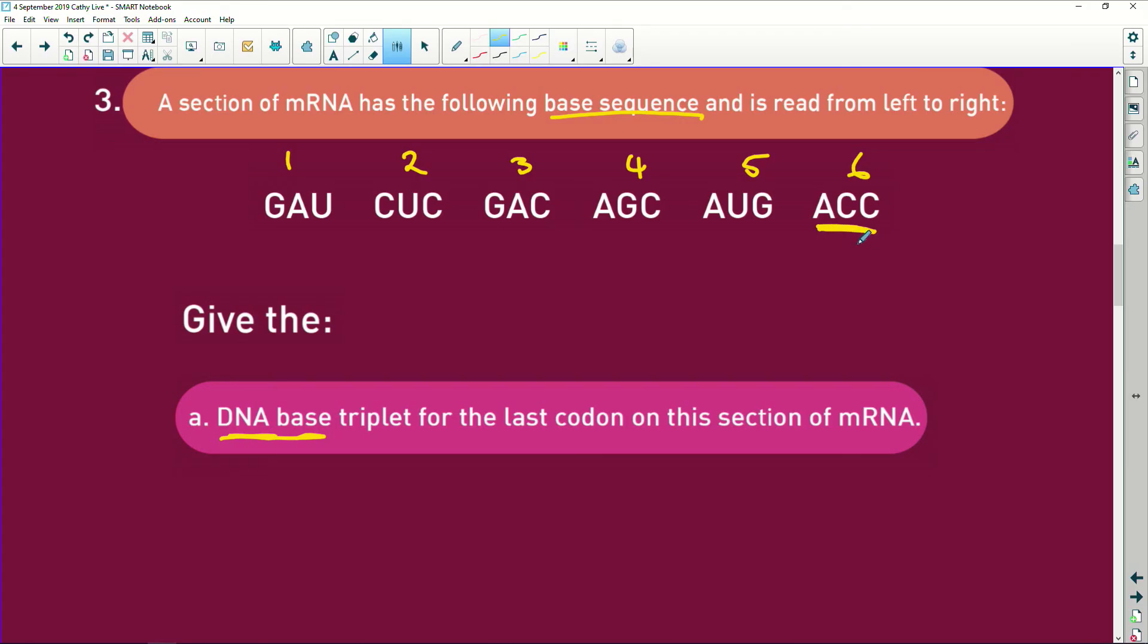Now remember DNA and messenger RNA is going to be the codon, it's going to be complementary to the DNA. So it's going to be TGG. It's as simple as that.